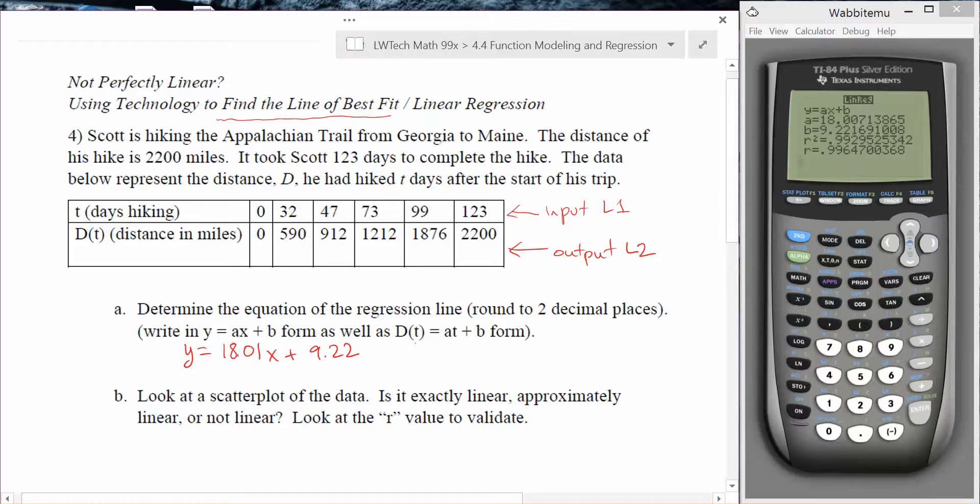The problem also asks us to write this function in function notation using the distance and time variables, so using d and t instead of x and y. Remember that when you write a function, this value here like d of t, the value inside here is our input value. So t is our input, so we are going to replace x with t. It does matter the way you do that. And then our output is the distance. So in this case it would be d of t equals 18.01t plus 9.22. Sometimes it's nice to have the x and y values because that translates over very nicely to graphing. And sometimes it's nice to have the t and d formula because then it's easy to recognize which variable, which numbers you should be plugging in for each variable.